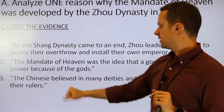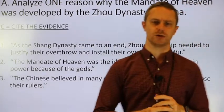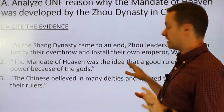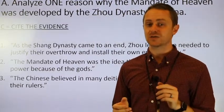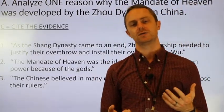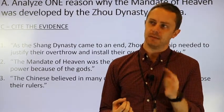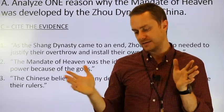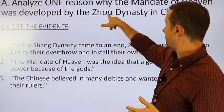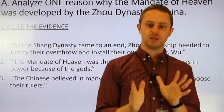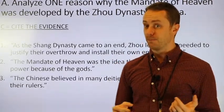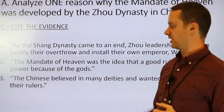Option three: The Chinese believed in many deities and wanted them to choose their rulers. That is not entirely inaccurate, but the reason it doesn't work is it's not specific enough — it doesn't even mention the Zhou. Chinese dynasties from the last several thousand years are not identical to each other, so it's worth noting the differences that were in place with the Zhou and their predecessors, the Shang. Don't generalize an entire people group that's been around for thousands of years and expect to get the point for specific evidence. That's why this one doesn't work.